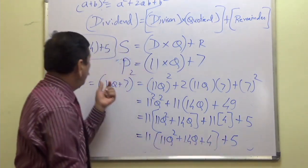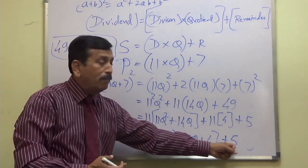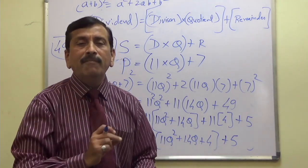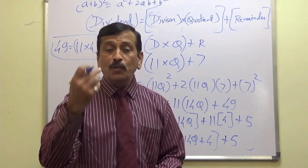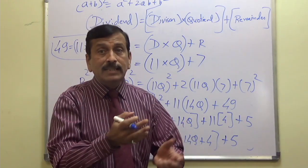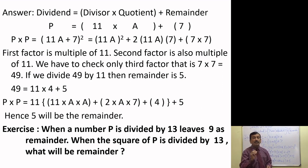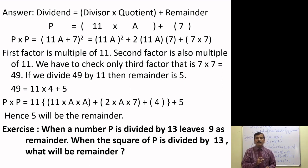Therefore, when P is divided by 11 it gives 7 as remainder, and when the square of P is divided by 11, the remainder will be 5. As an exercise: when a number P is divided by 13 with remainder 9, what will be the remainder when the square of P is divided by 13? Try on the same lines.